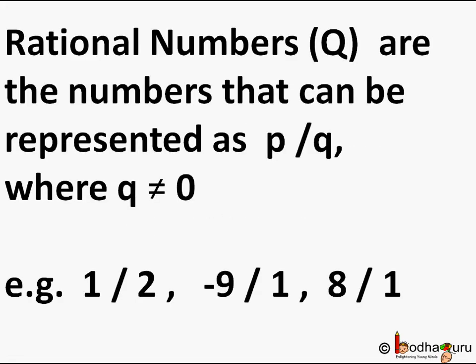Hello friends, as we have seen in our last video, a number R is called a rational number if it can be written in the form P by Q, where P and Q are integers and Q is not equal to 0.